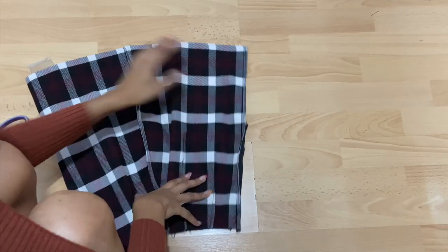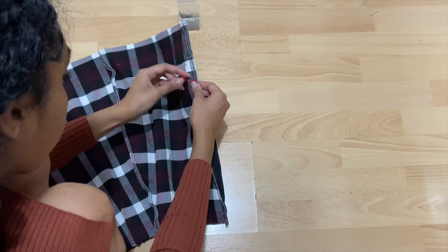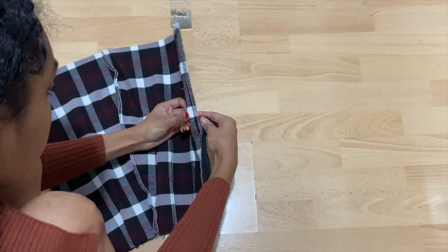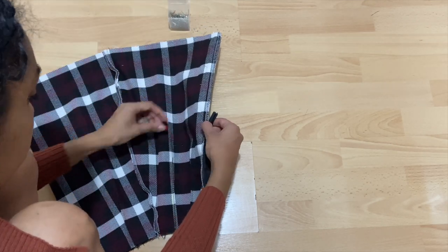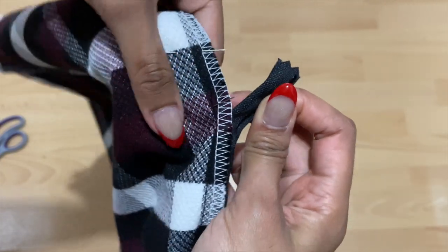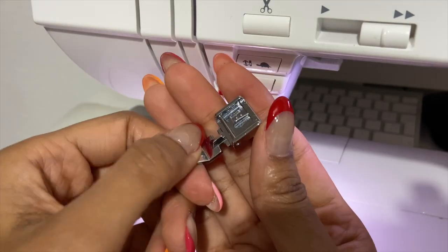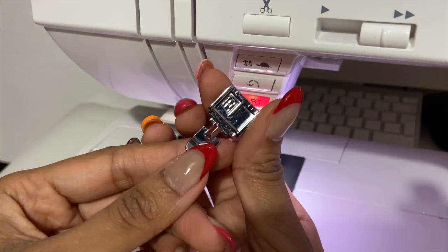and I can move on to finishing the back seam. This bit is really easy to do. You want to pin the back seam closed as normal. Again, I'm matching up the pattern on my fabric, and then we're going to do a straight stitch from the bottom right up until we reach the zipper and secure it with a backstitch. You're going to have to change your foot to a normal zipper foot so we can get close to the zipper seam.